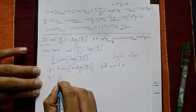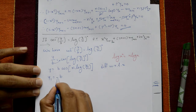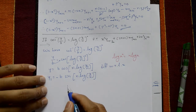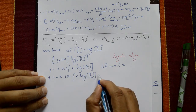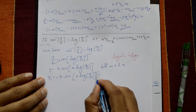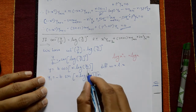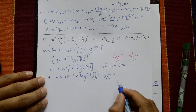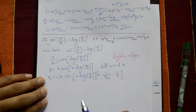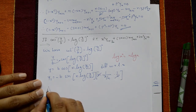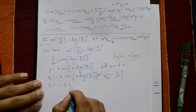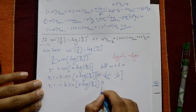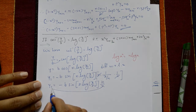y₁ = −b · sin(n · log(x/n)) · n · (1/x). So y₁ = −nb · sin(n · log(x/n)) / x. Multiplying both sides by x: x y₁ = −nb · sin(n · log(x/n)).